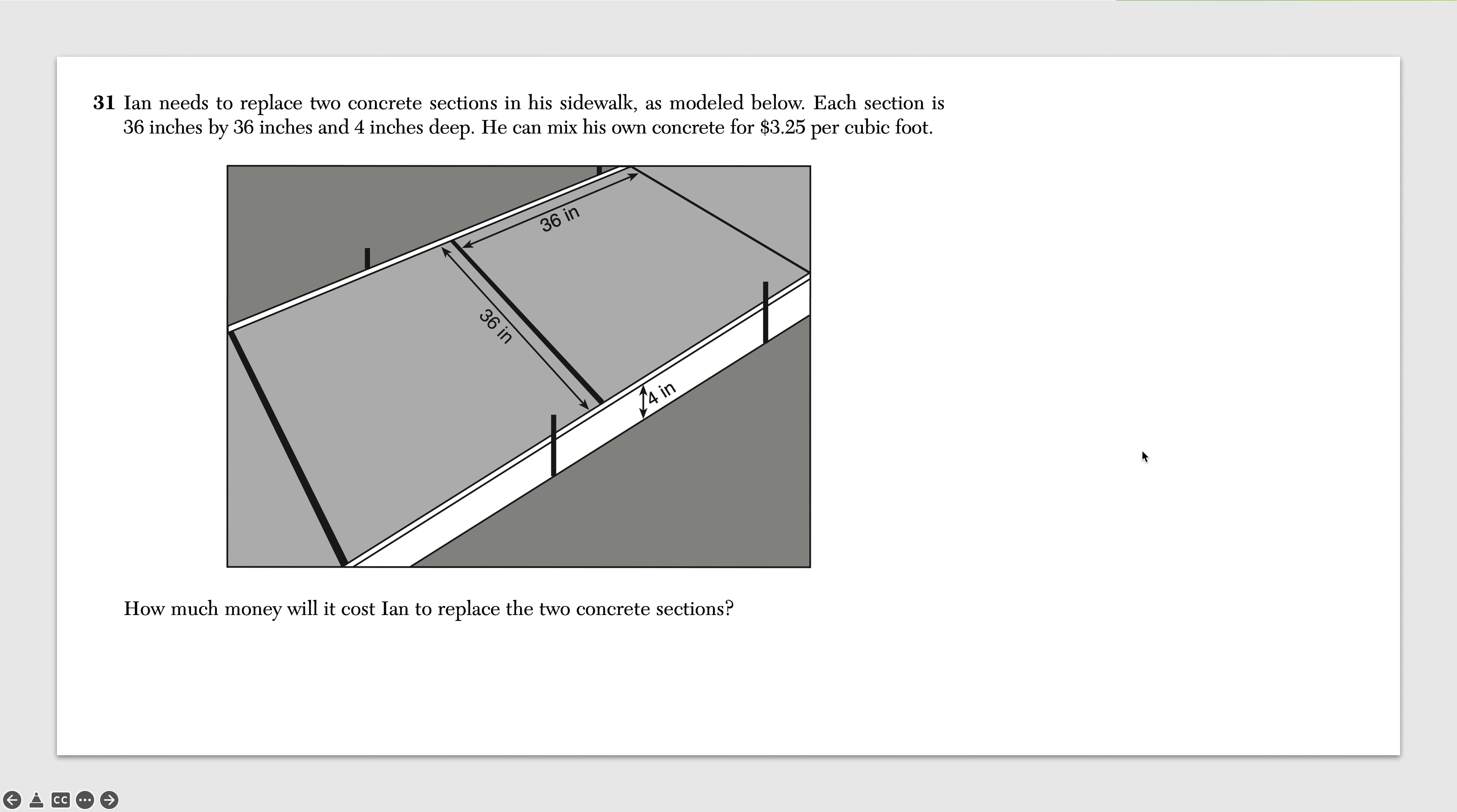It's 36 times 36 for the square times 4 inches, which gives me 5,184 inches cubed. And fortunately, there are two of them. So I double that, and I get 10,368 cubic inches for the two sections. Then I have to divide that by, because it wants to go to cubic foot. Dividing by 12 and 12 and 12 again, because in each case, I'm converting from inches to feet. And I get 6 feet cubed. I still haven't gotten to the right answer yet, because it wants to know how much money it's going to cost to replace this. That's $3.25 per cubic foot. So 6 times 3.25 is $19.50 altogether for the charge.